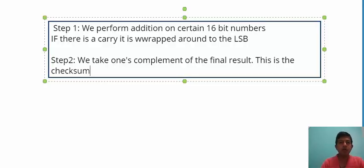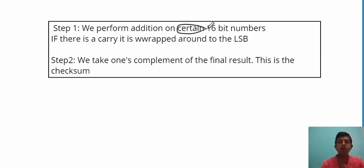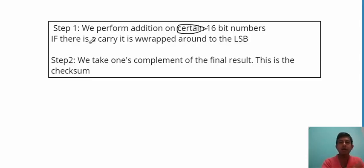In the first step we perform addition — it's a normal binary addition on certain 16-bit numbers. If there is a carry at the end, this carry is wrapped around to the lowest significant bit and it is added again. In step 2, the final result is taken and we take the one's complement of that result. This final one's complement is known as the checksum.